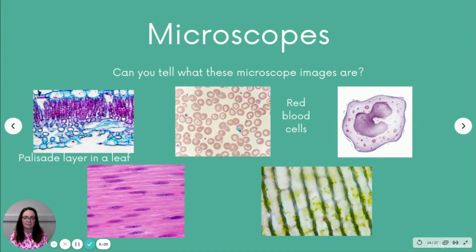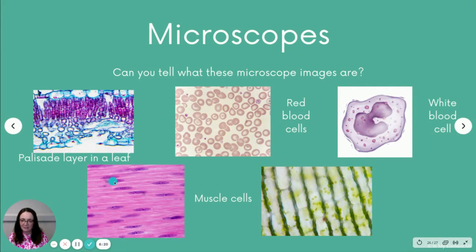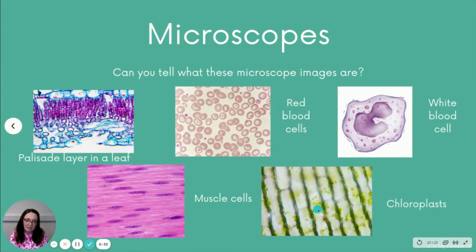This one here is a white blood cell. This one here is a muscle cell — you can see the cell organelles here, these are all mitochondria, with those wiggly lines we talked about in the previous lesson; they're the site of respiration. The final one — the color is a giveaway — these are chloroplasts within plant cells.